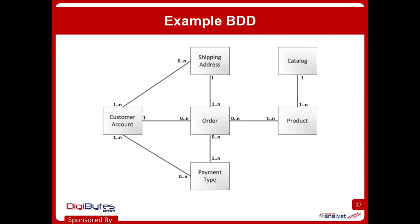Here's an example of a BDD for an online store. All my examples today are going to be from an online store. In the middle we have an order, a shipping address, customer accounts, payment types, the products themselves — maybe those products belong to a catalog. When I talk about business rules buried in this diagram, the kinds of questions I would ask stakeholders when reviewing it are: can an order be shipped to one address only or can it be split across multiple addresses? Right there, that question is describing the line between order and shipping address and the cardinality of that line.